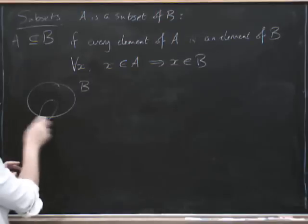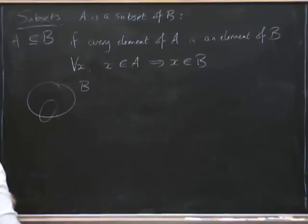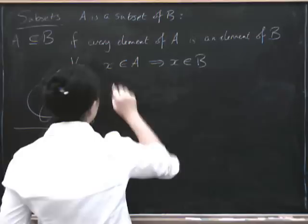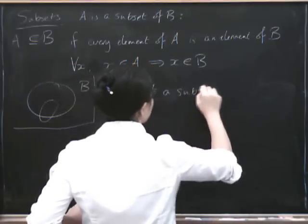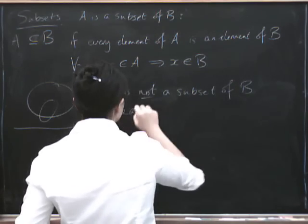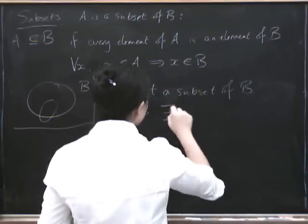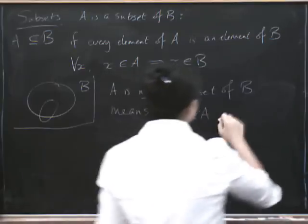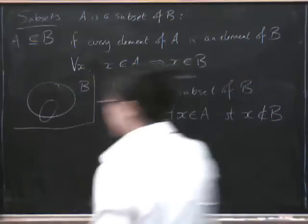In that case, this bit sticking out would show that A wasn't a subset of B. So how do we say that formally? We say, let me draw a box around that picture. So A is not a subset of B means that there exists an element of A such that X is not in B.